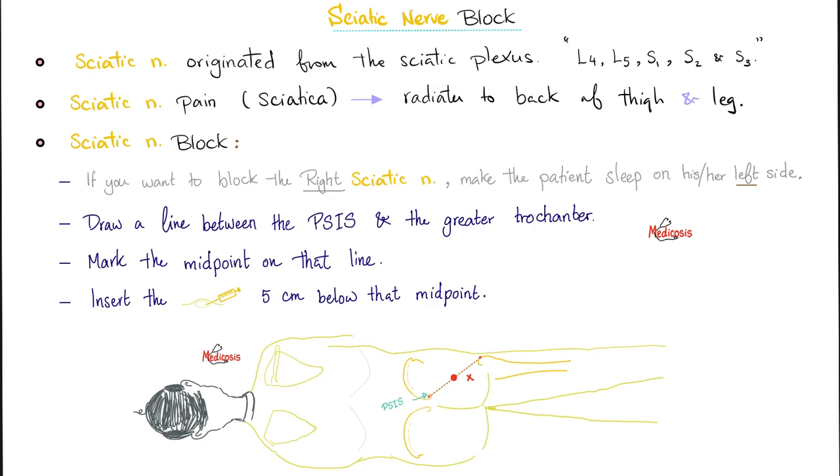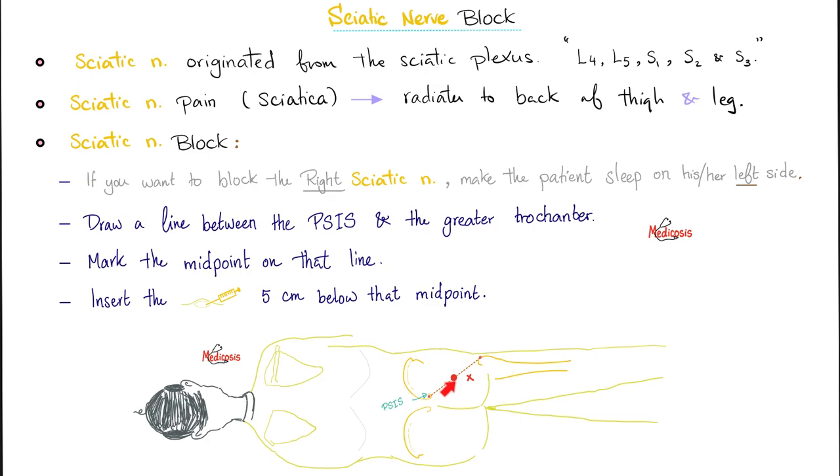Sciatic nerve block. Where did the flip did the sciatic nerve originate from? It came from the lumbosacral plexus. And where's that? L4, L5, S1, 2, and 3. Sciatic nerve pain, aka sciatica, is a pain radiating to the back of the thigh and the leg and the buttock. So it goes this way. How do I block it? If you are trying to block the right sciatic nerve, let the patient lie on their left side, and then you draw an imaginary line between the posterior superior iliac spine and the greater trochanter. And then mark the midpoint of this line, and then go 5 centimeters caudal or below inferior to that point, and this is where you inject.